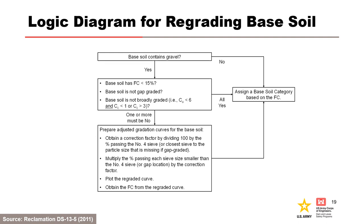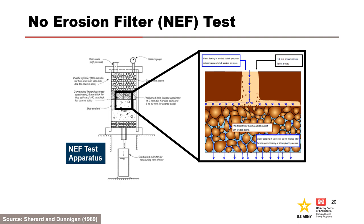If the maximum particle size is larger than 4.75 millimeters or the number 4 sieve, then you re-grade so that the maximum size is 4.75 millimeters. If the base soil is gap-graded, it must be re-graded on the closest sieve to the particle size that is missing. The no-erosion filter test was developed by Sherrard and Dunnigan to determine the ratio of D15 of the filter and D85 of the base that establishes a no-erosion condition for non-dispersive base soils. Additional research by Foster and Fell informed the development of the no-erosion condition for dispersive base soils. Particle retention criteria for modern filter design is based on the no-erosion filter concept.